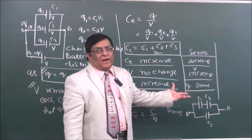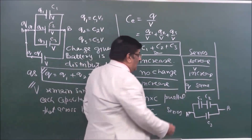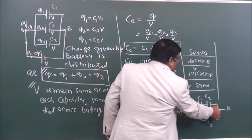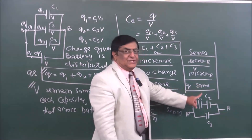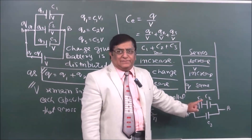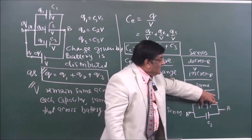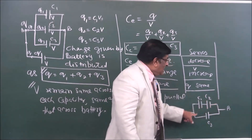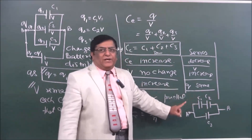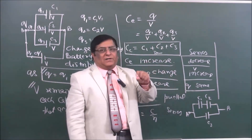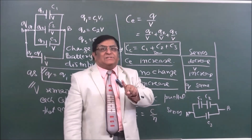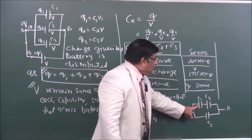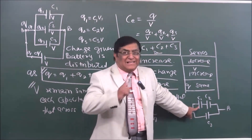The answer is clear: C1 and C2 are in series with each other. And this series combination is in parallel with C3.